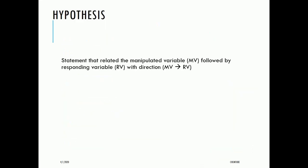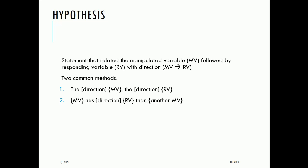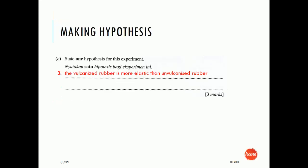For the hypothesis, the technique is to write a statement relating the manipulated variable followed by the responding variable, with a direction. For example: 'higher MV, higher RV.' In this experiment, method 2 works: 'The vulcanized rubber is more elastic than the unvulcanized rubber' for score 3. Score 2: 'The vulcanized rubber is elastic.' Score 1: 'Rubber has different elasticity.' If MV or RV has no direction, the maximum score is 2.